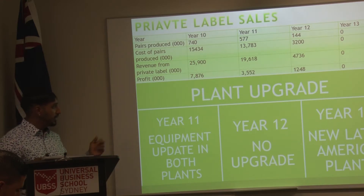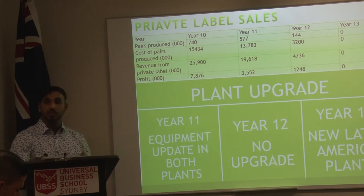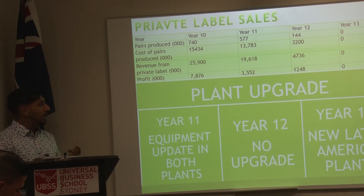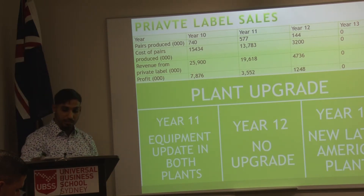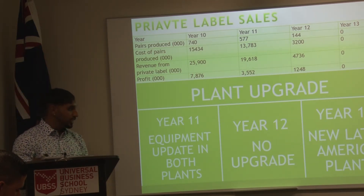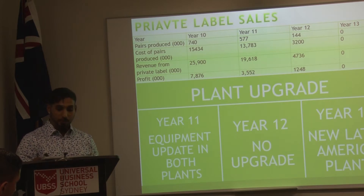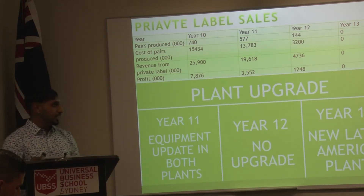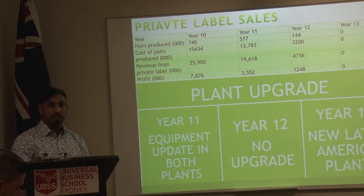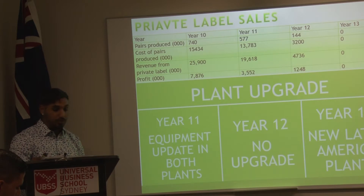For plant upgrades, in year 11 we spent $42 million upgrading both plants in North America and Asia-Pacific, which helped us achieve one more star in quality — going from eight to nine stars — to gain more market share. In year 12 we decided not to do any upgrades. In year 13, we are adding a new plant in Latin America with a capacity of 1 million shoes in regular production and 200,000 shoes on overtime.